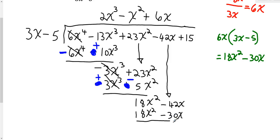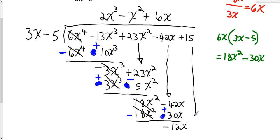Since we're subtracting, the signs change again. Negative 18x squared and positive 30x. The 18x squared and negative 18x squared cancel. Then negative 42x and positive 30x give negative 12x. I bring down the next term, which is plus 15.